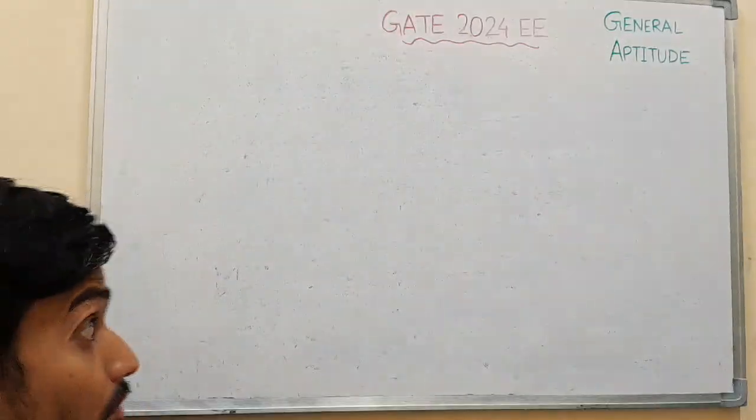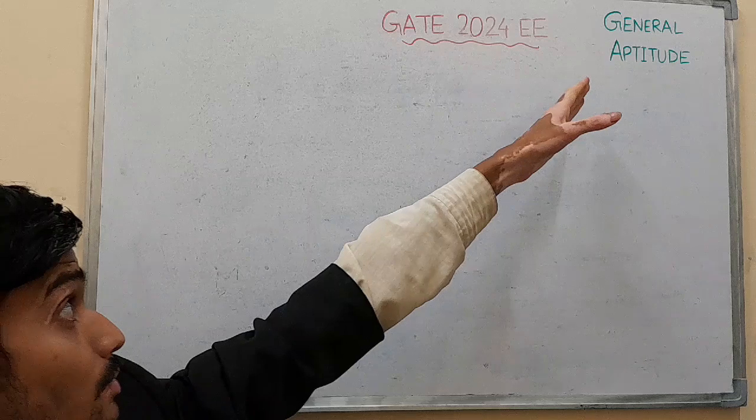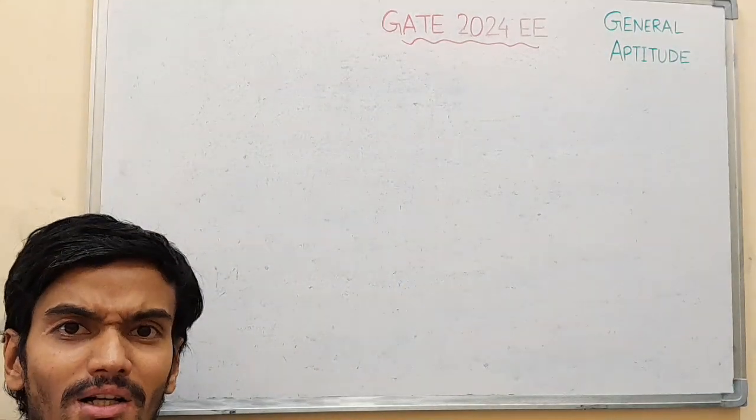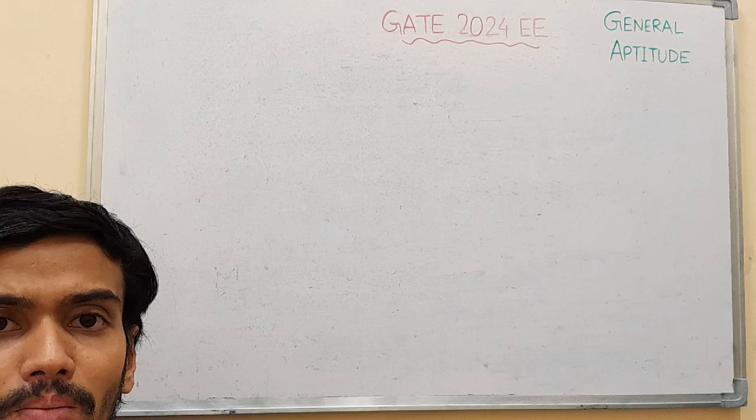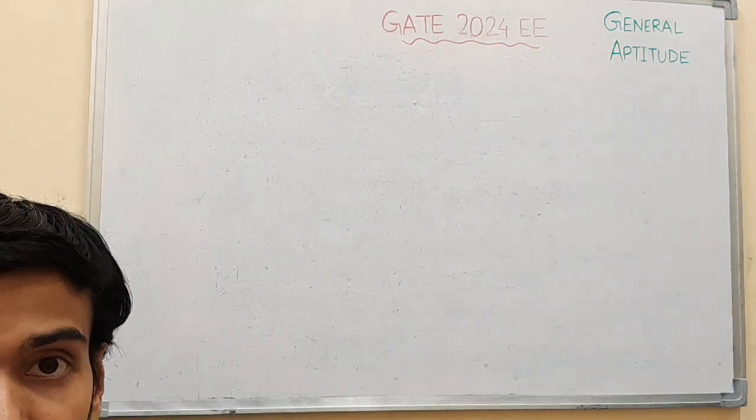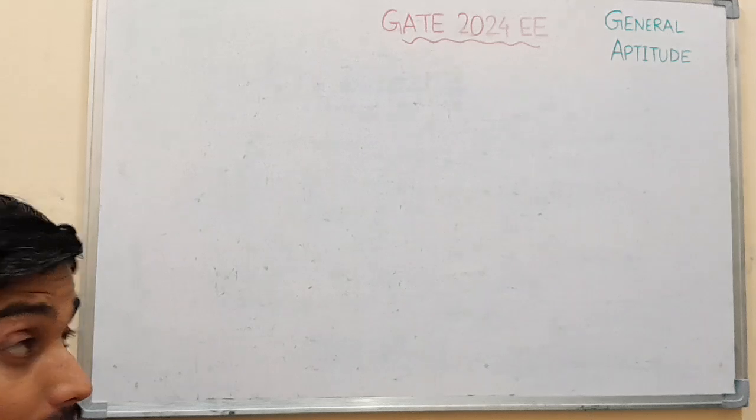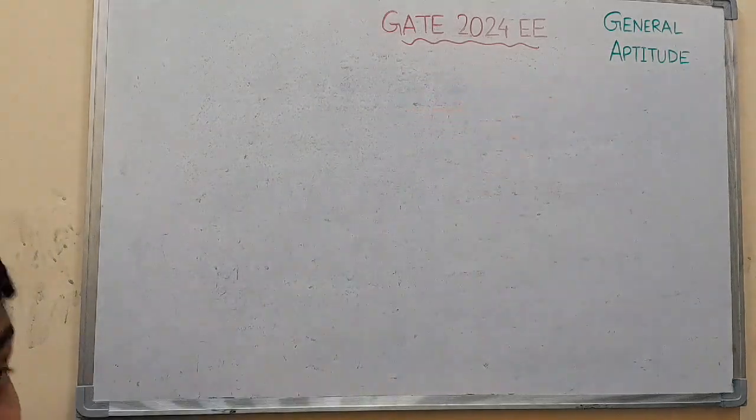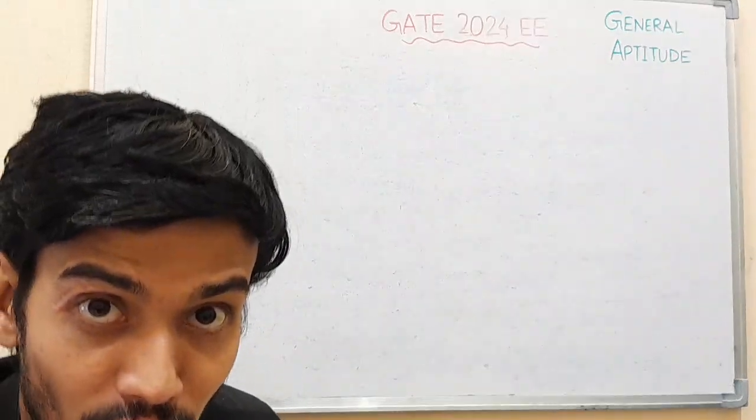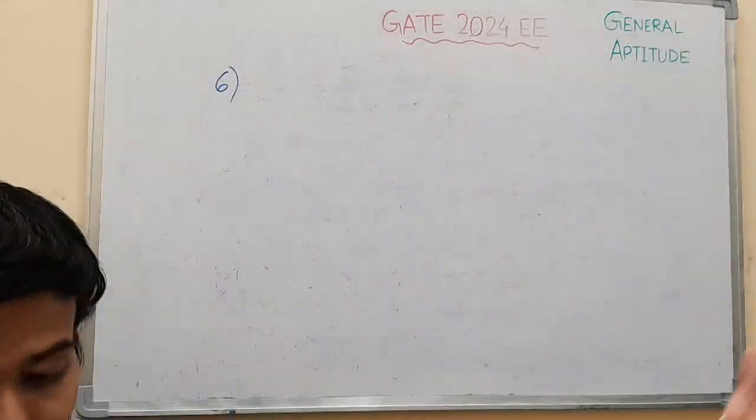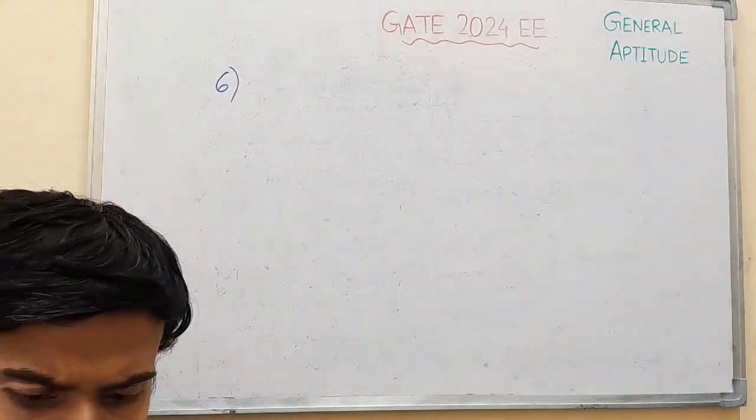Moving on to the next question in the series of GATE 2024 Engineering institutions from subject general aptitude, question number six. These are two marks MCQ type from English subject, English prepositions, question number six from GATE 2024 engineering from subject general attitude.